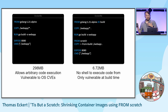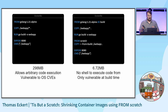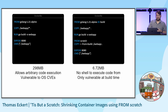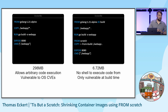Let's review. We changed the Dockerfile on the left to the one on the right. As a result, we reduced the size of our image by 97%. We reduced attack vectors by removing a shell, and we made it so that we are only vulnerable to CVEs from the operating system at build time. I hope you can use this to write smaller, faster to ship, and more secure container images. Thank you.